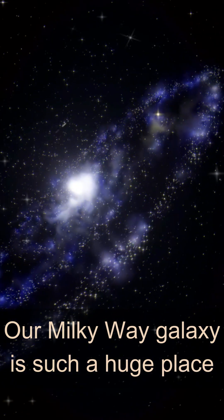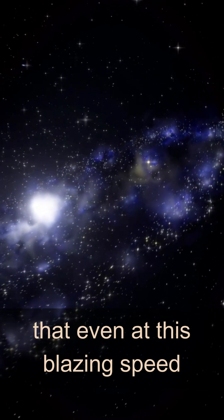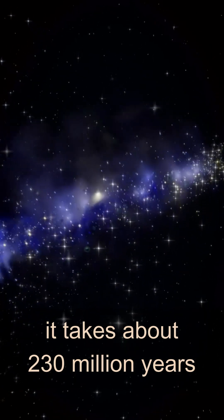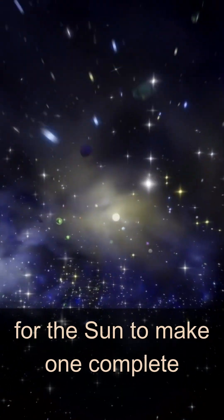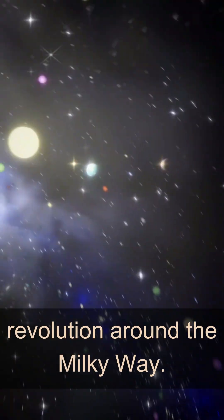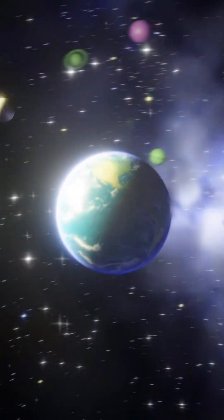Our Milky Way galaxy is such a huge place that even at this blazing speed, it takes about 230 million years for the sun to make one complete revolution around the Milky Way. Thank you.